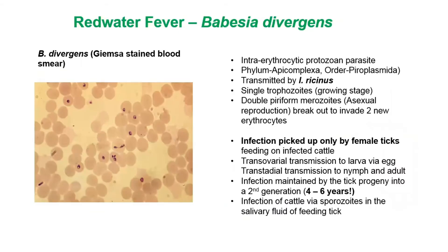Red water fever is caused by Babesia divergens, an intra-erythrocytic protozoan in the Apicomplexa group, related to coccidia and malaria, and transmitted by Ixodes ricinus. In a stained blood smear, purple-staining dots appear within the pink red blood cells. The single forms are growing stages or trophozoites, and the double pear-shaped bodies are known as merozoites. These merozoites break out of the red blood cells and invade two new red cells.